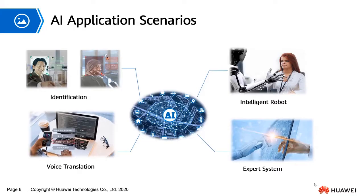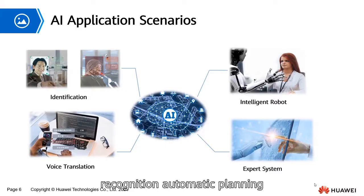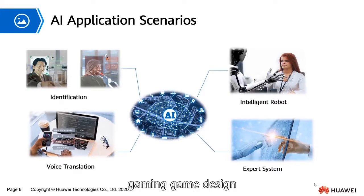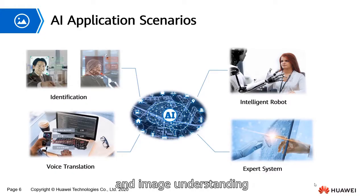In addition, there are machine vision, fingerprint recognition, iris recognition, palm print recognition, handwriting recognition, automatic planning, intelligent search, theorem proving, gaming, game design, automatic program design, intelligent control, language and image understanding, and genetic programming. AI has undoubtedly been applied in many areas.